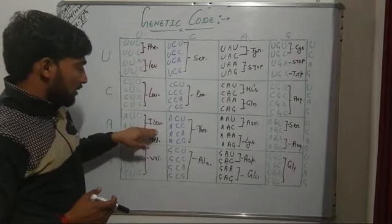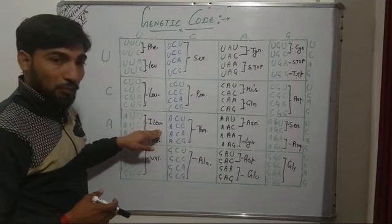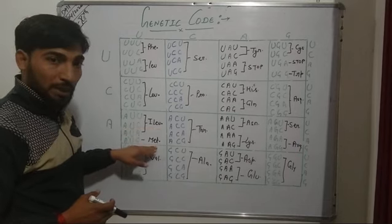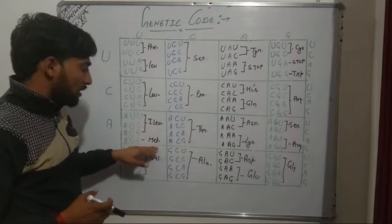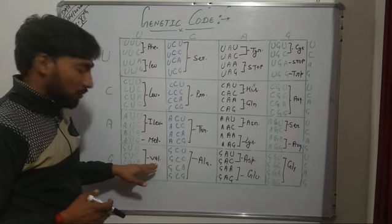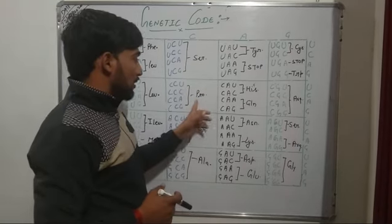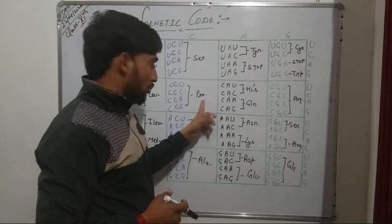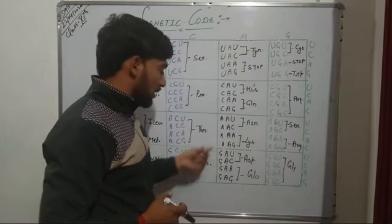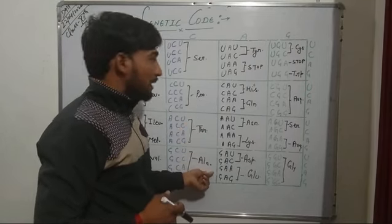Again, leucine. Then ILEU for isoleucine. MET for methionine. VAL for valine. SER for serine. PRO for proline. THR for threonine. ALA for alanine.